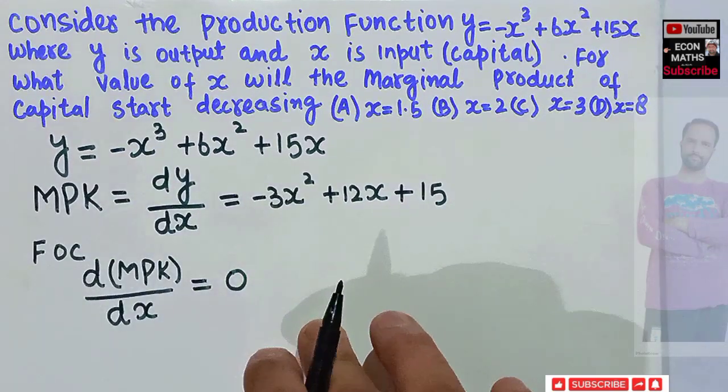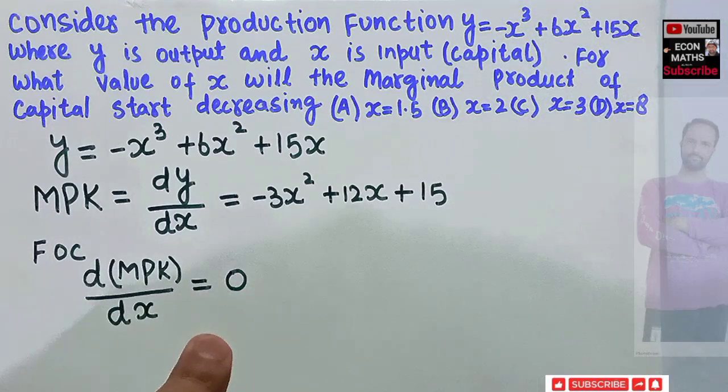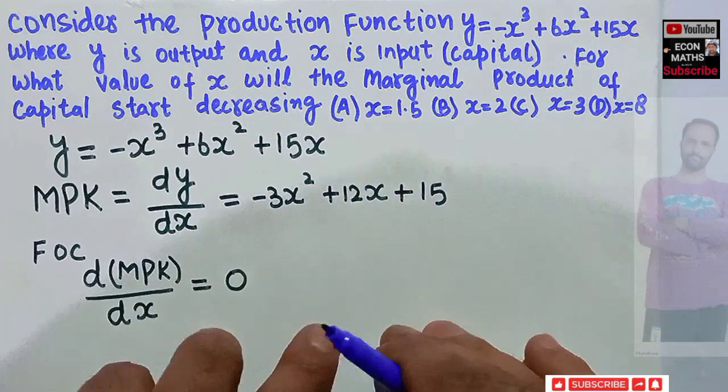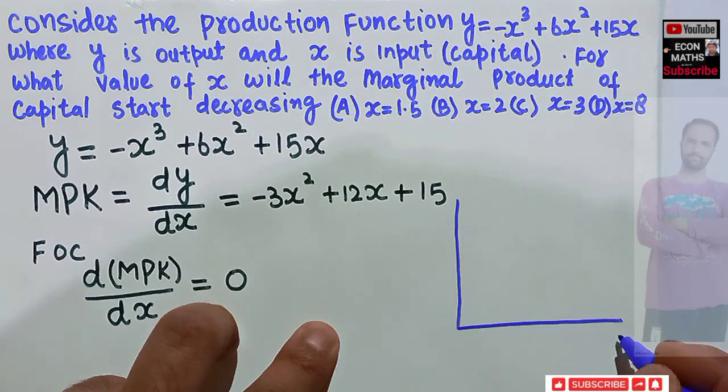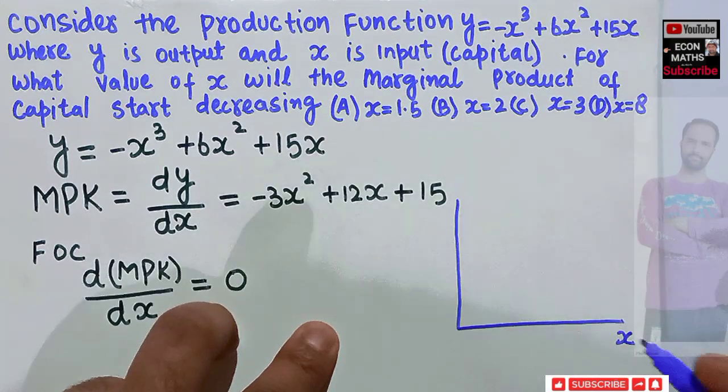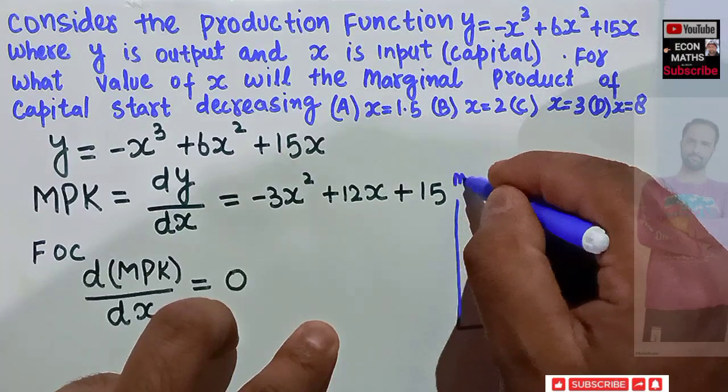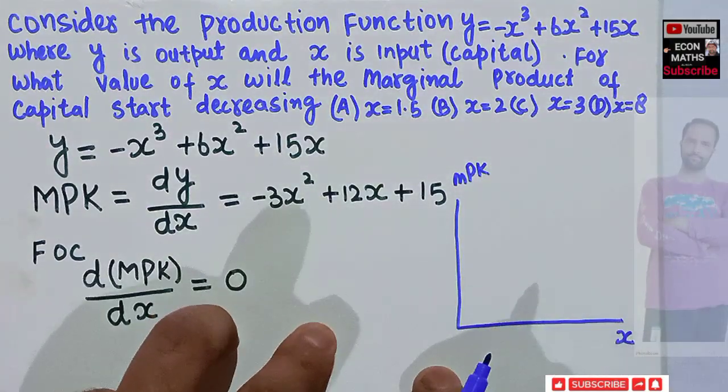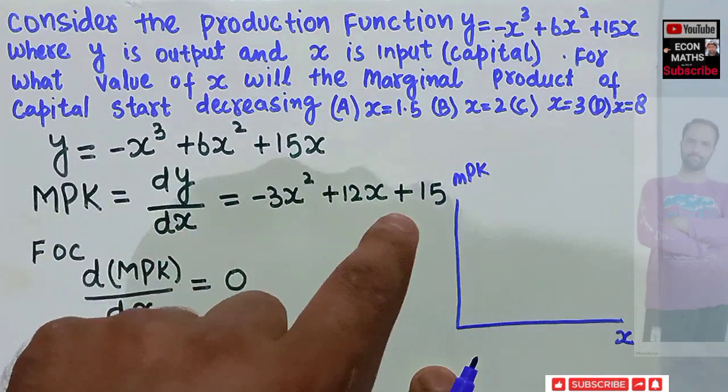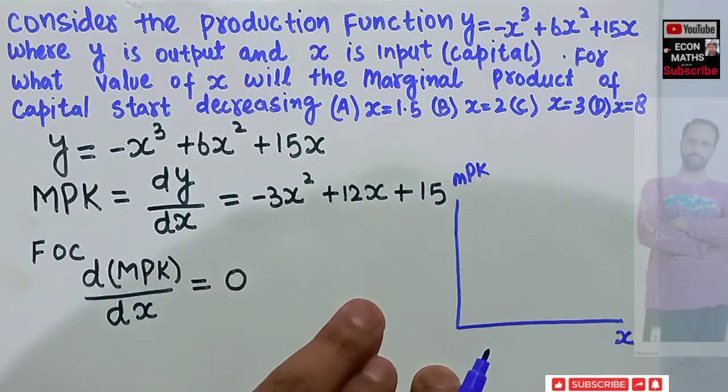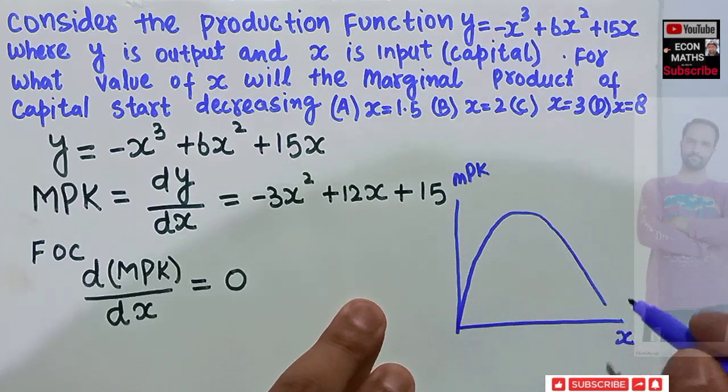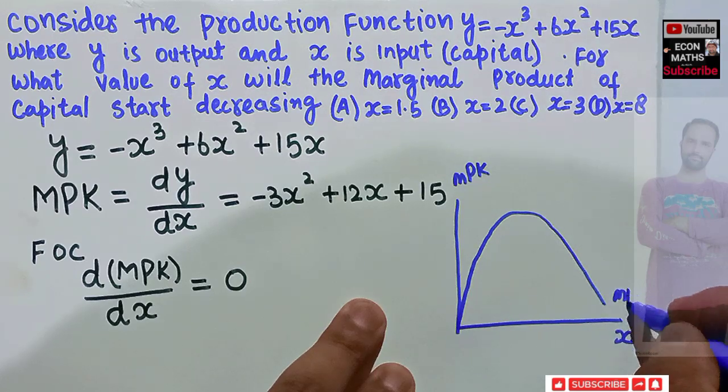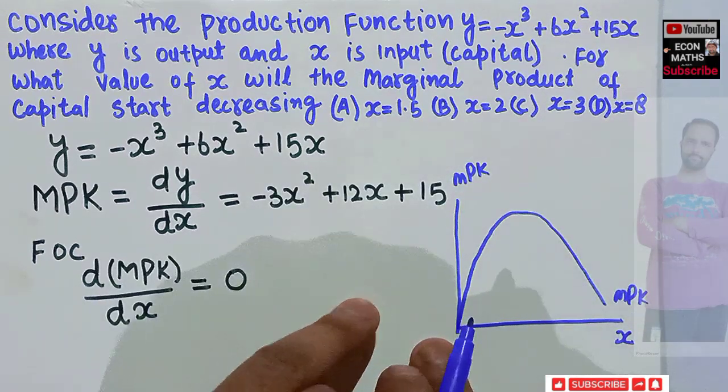So let's draw the graph here to make it more reasonable to understand. Our graph will look like this: if I denote units of capital by x on the horizontal axis and the marginal product of capital on the vertical axis, then marginal product of capital's graph is a quadratic one, so it will look like this. This is our MPK.